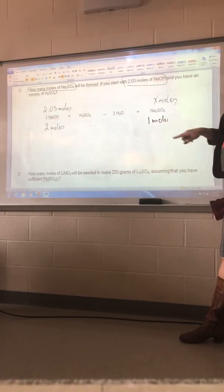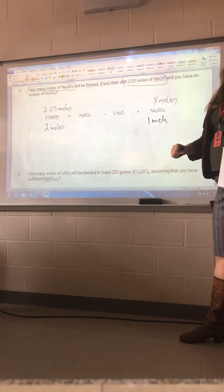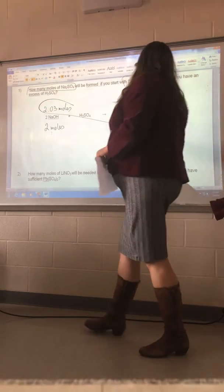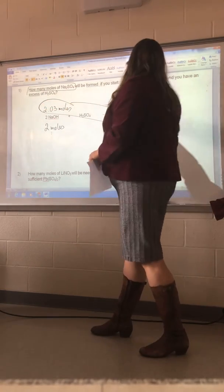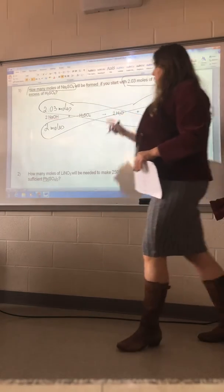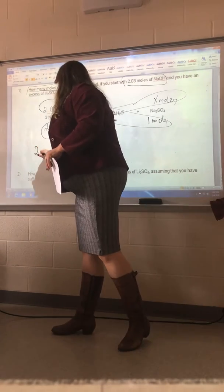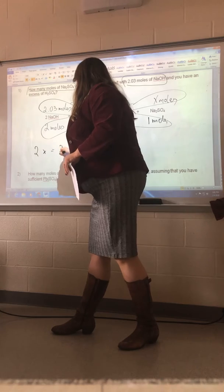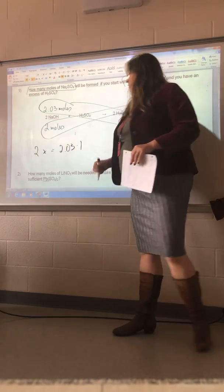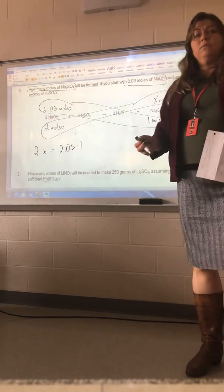Okay, what do I do now? Criss-cross. I go like that, right? Your butterfly method or criss-cross multiplication or whatever you want to call it, as long as you put down something like this. So I have 2 times X equals 2.03 times 1. Not so bad, right? Kind of similar.